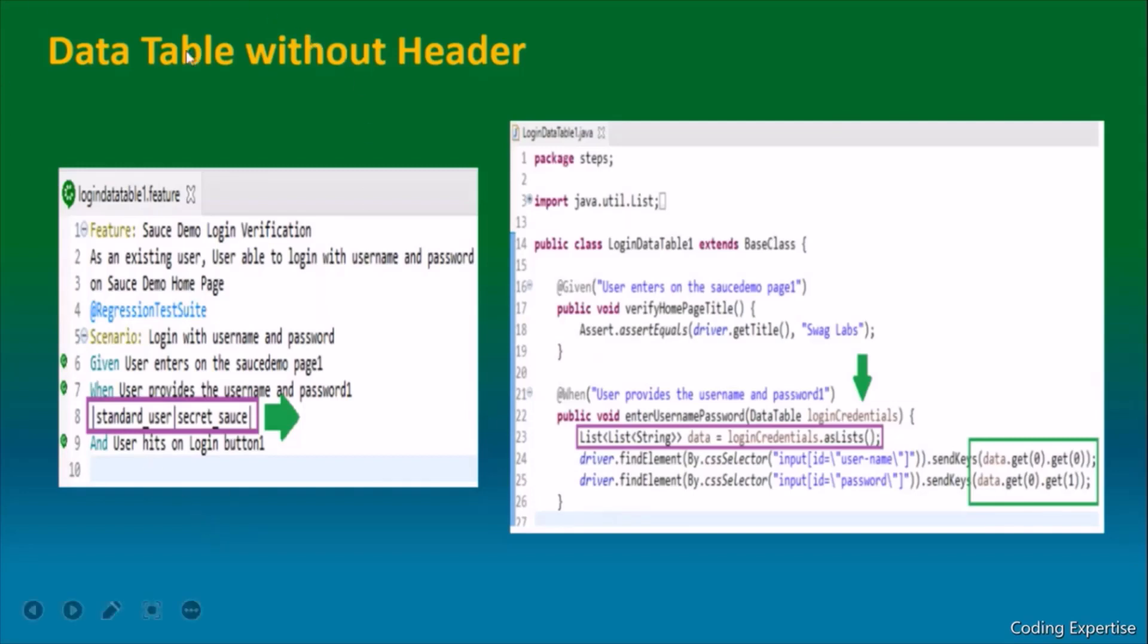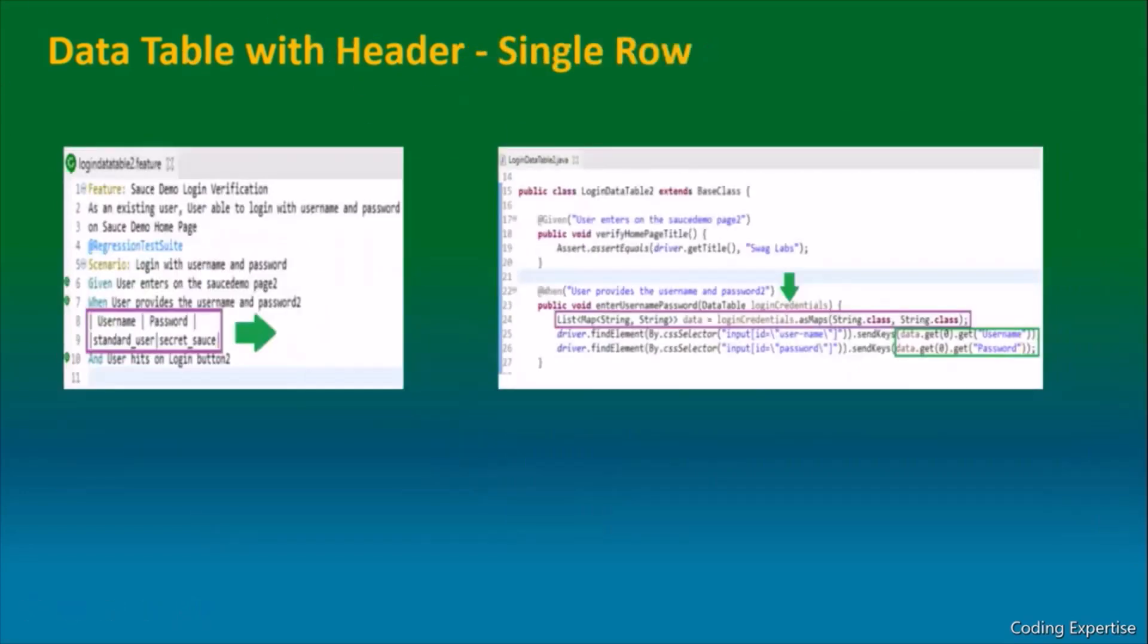We had seen the example data table without header. Let's see one more. Data table with header single row combination. Here we use header with the data. When I say header, obviously map comes to your mind. Everything remains the same. Enter username password is a method and login credential is the parameter in the form of data table. AsMap is the method through which we are trying to fetch the data from the feature file. Data.get(0).get(username) - using this key username, we are trying to fetch the data from the feature file, and using password we are getting the password value.